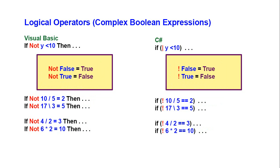We have another logical operator called NOT. NOT simply reverses the trueness of an expression. If something is NOT false, it's going to be true. If something is NOT true, it's going to evaluate to false. For example, NOT 10 divided by 5 equals 2 — well, 10 divided by 5 is 2, that's a true statement, but the NOT in front of it makes that expression false.